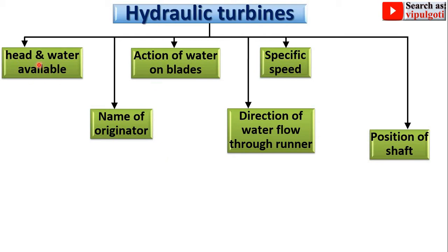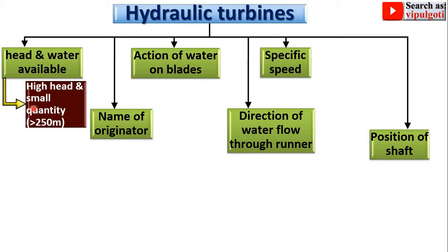Starting with the first classification — high head and small quantity, meaning low discharge. If the head is high and the discharge is low, generally more than 250 meters, then it is called a high head hydraulic turbine. The example is the Pelton wheel.